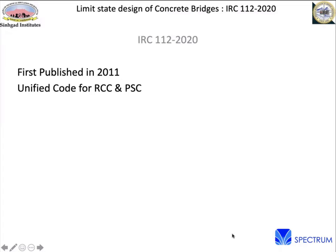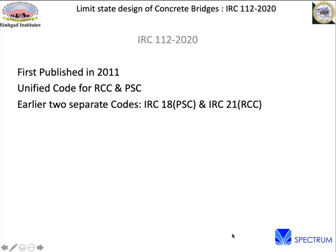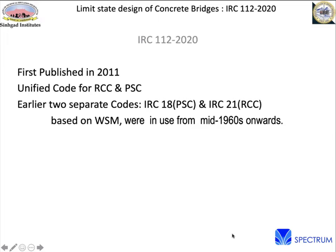Prior to that, we used to have two codes: IRC-18 for Prestressed Concrete and IRC-21 for RCC. These codes were based on a working stress method since the 1960s. It took almost 50 years to convert our codes into a limit state code, and after quite good efforts from all members, it was finally published in 2011.